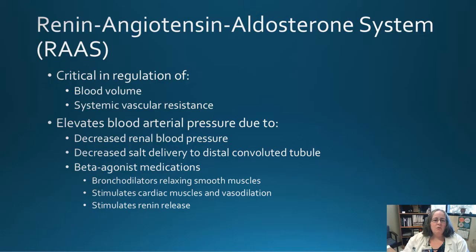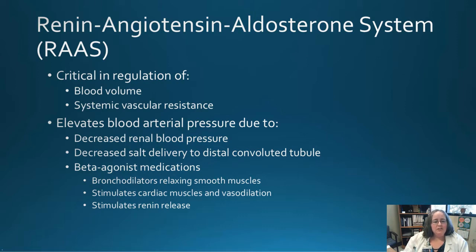The RAS system is critical for regulating blood volume and overall blood pressure. It works to elevate blood pressure when there is a decrease in renal blood pressure, a decrease in salt delivery to the distal convoluted tubules, or when medications have been given to purposely decrease blood pressure. When you take medications to decrease blood pressure, your body is still trying to counteract those effects.